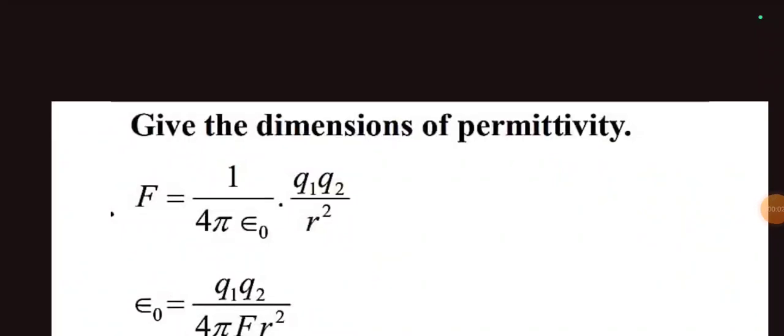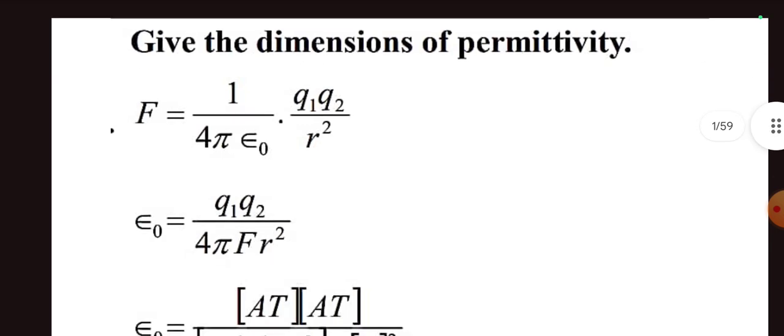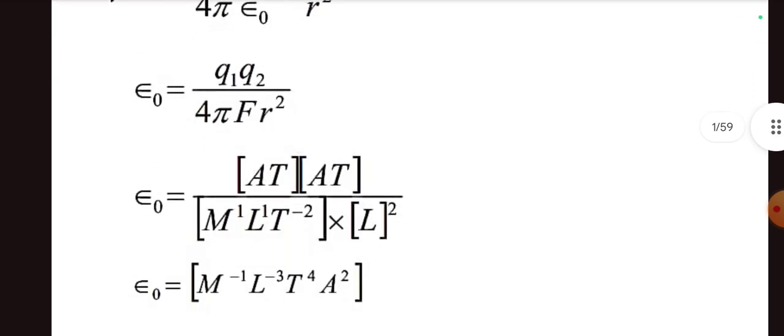This is about 2024-5 physics 2 or 3 mark important questions with answers. First question: give the dimension of permitivity. The answer will be told, screenshot will not be told.